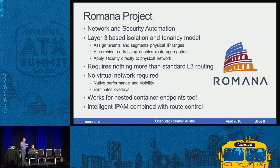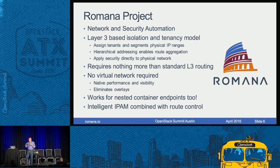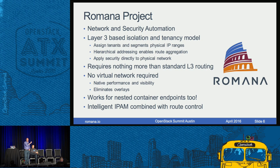The great thing about this approach is you don't need an overlay. Everything can be done with the physical infrastructure — all you need is layer 3 routing, which the largest data center operators in the world have proven to be the most reliable, easiest to debug, and most scalable way. Romana is completely dependent on the IPAM capability of Neutron. But assigning the IP address is only one side of the coin — you also have to configure routes so addresses are reachable. So Romana combines intelligent IP address management with automated route control and configuration.